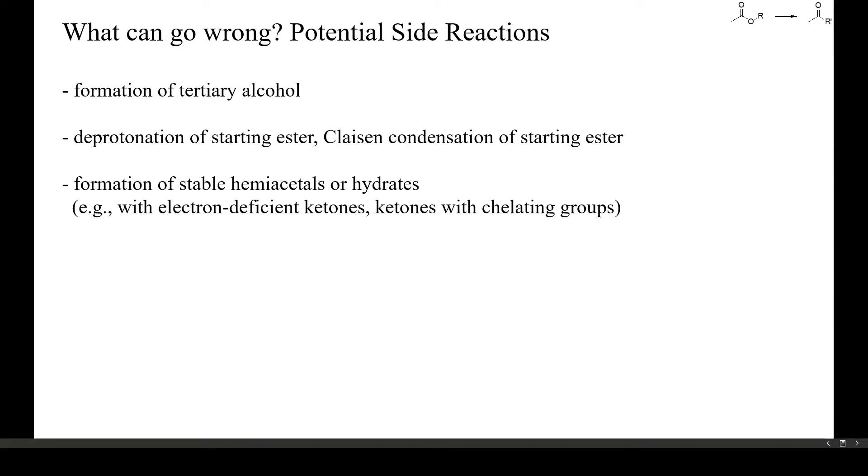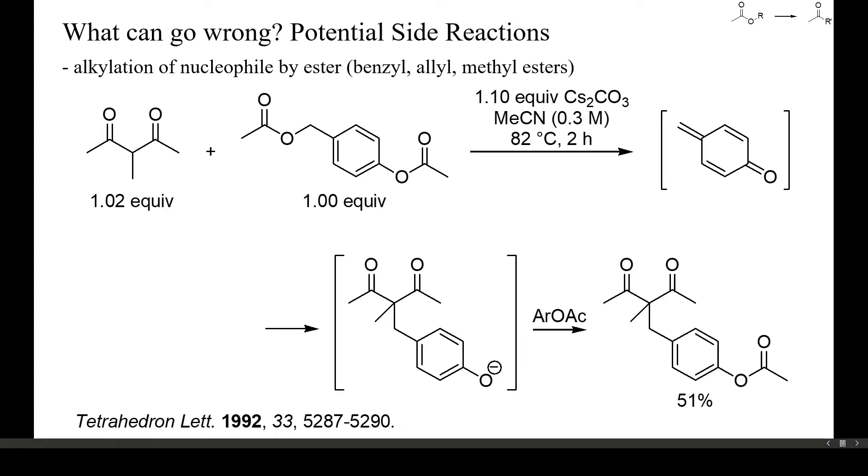Some benzyl, allyl or methyl esters may also alkylate a given nucleophile instead of acylating it. Particularly reactive are electron-rich benzyl esters. 4-hydroxybenzyl esters, as in this example, are exceedingly strong benzylating reagents because of intermediate quinone methide formation and thus not really representative. But also less reactive benzyl or allyl esters may alkylate nucleophiles. This side reaction becomes particularly prominent in the presence of catalytic amounts of late transition metals.